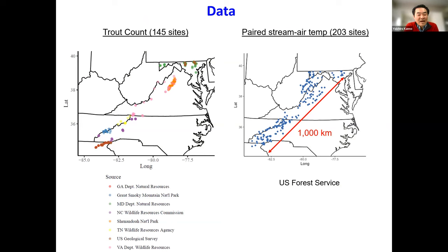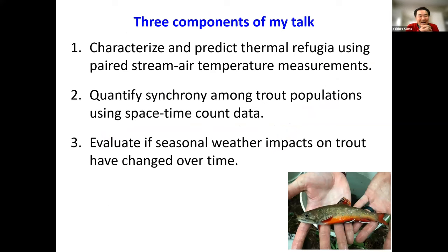This degree of spatial synchrony has conservation implications, because landscape-level planning and prioritization — such as identifying climate refugia in the Southeast — only makes sense if spatial heterogeneity is high. This is why we compiled and analyzed trout and stream temperature data in the Southeast to characterize the degree of spatial heterogeneity. These data span over about 1,000 kilometers of linear habitat range, and our study area expanded beyond the SE CASC jurisdiction as far north as Maryland. My talk has three components: temperature data analysis, population synchrony quantification, and evaluation of seasonal weather impacts over time.